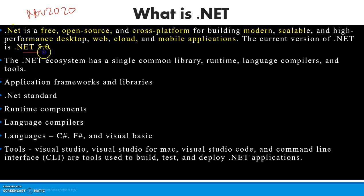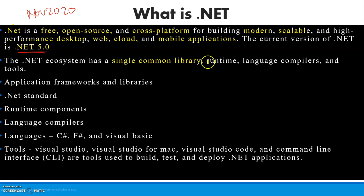The .NET ecosystem has a single common library — we don't need to use multiple libraries. It has a single runtime environment and different language compilers. .NET provides a framework and different inbuilt libraries which we can use to develop applications. As a .NET standard, it includes runtime components, language compilers, and languages like C#, F#, and Visual Basic.